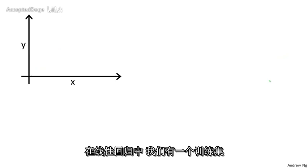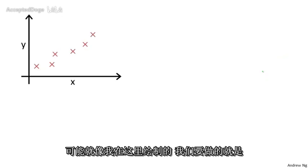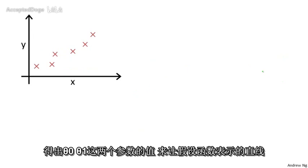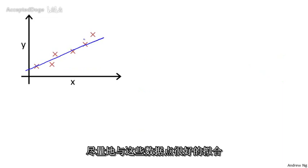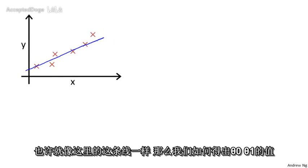In linear regression, we have a training set, like maybe the one I've plotted here. What we want to do is come up with values for the parameters θ₀ and θ₁, so that the straight line we get corresponds to a straight line that somehow fits the data well, like maybe that line out there. So how do we come up with values θ₀, θ₁ that corresponds to a good fit to the data?